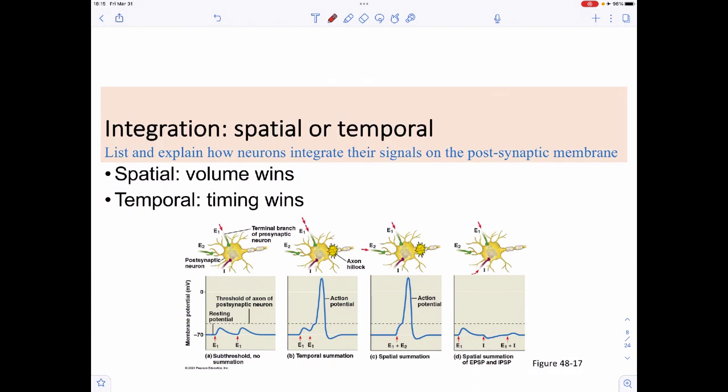The two options that we have are called summations. We have either spatial summation or temporal summation. Spatial summation is when the volume of the neurotransmitter is the important bit. Meaning if I secrete 100 excitatory neurotransmitters and 50 inhibitory neurotransmitters, then the excitatory wins. But if you flip this and do 100 inhibitory and 50 excitatory, then the inhibitory one wins. So it's a volume game.